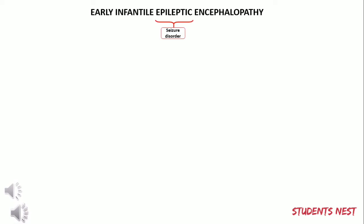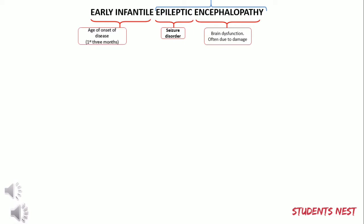Early Infantile Epileptic Encephalopathy: 'epileptic' means seizure disorder, and 'encephalopathy' means brain dysfunction often due to damage. In general, epileptic encephalopathy is a condition where the epileptic activity is responsible for severe and permanent brain impairment and behavioral changes. The 'early infantile' refers to the age of onset of the disease, which is usually within the first three months of life.